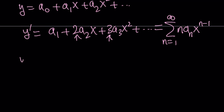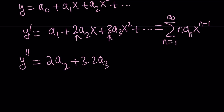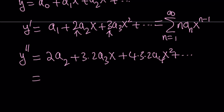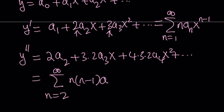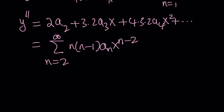The second derivative is just this differentiated one more time. It's going to be 2 A sub 2, then 3 times 2 times A sub 3 times X, then 4 times 3 times A sub 4 times X squared, and so on. This can be written with the summation symbol as the sum from N equals 2 to infinity of N times (N minus 1) times A sub N times X to the power N minus 2, because we've lost 2 of the X's.